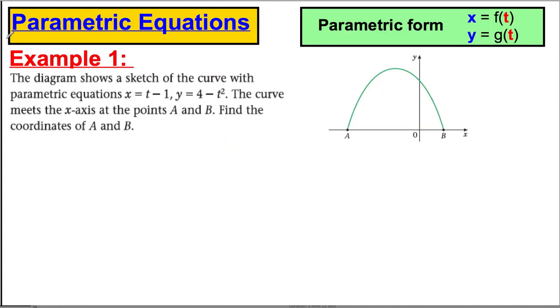So here's the first one. There's a diagram, and the diagram shows a sketch of the curve with parametric equations x equals t minus 1, y equals 4 subtract t squared. The curve meets the x-axis at A and B. Find the coordinates of A and B. I always find it very helpful just to write my parametrics out. So x equals t subtract 1, and y equals 4 subtract t squared.